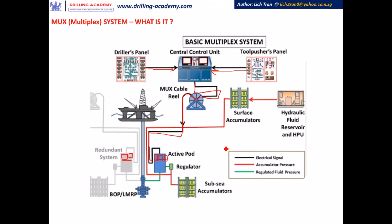Another similarity with the indirect hydraulic system is that at surface we also have the pod selector to choose the blue pod or yellow pod to be the active one. The unselected pod's umbilical will return the power fluid to the surface reservoir tank. In this case, this is the inactive pod, and the 1-inch diameter hose will return the fluid back to the surface tank and the cooling unit. The 3,000 or 5,000 psi power fluid is supplied from surface.